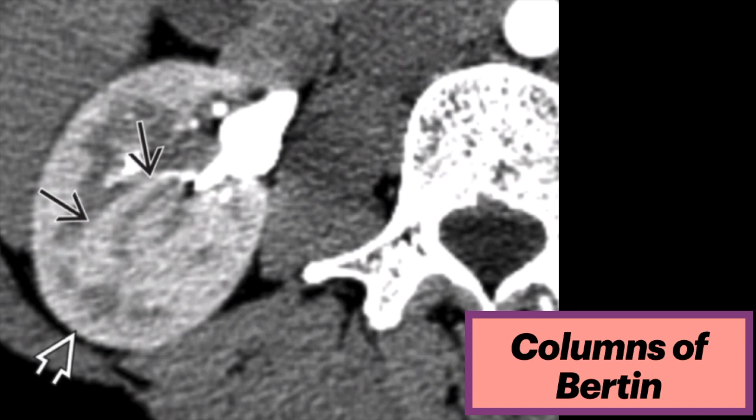They are found at the junction of the upper and middle thirds of the kidney. Hypoechoic renal pyramids are not always visualized within the columns of Bertin, but are characteristic if identified.